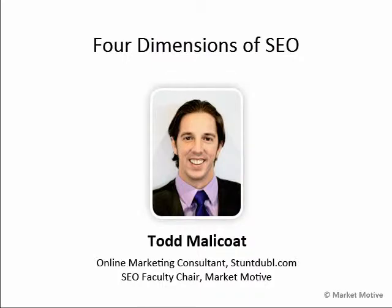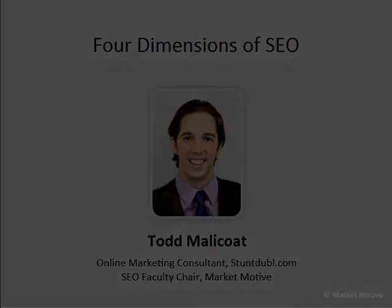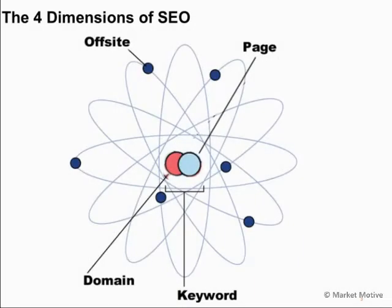We'll look at a brief history of SEO and where it's progressed over the last 20 years or so, the ranking factors and how they impact SEO. Google says there's over 200 ranking factors. We're going to categorize those and chunk those down into the four dimensions of SEO: the page dimension, the domain dimension, the keyword dimension, and the off-site dimension.